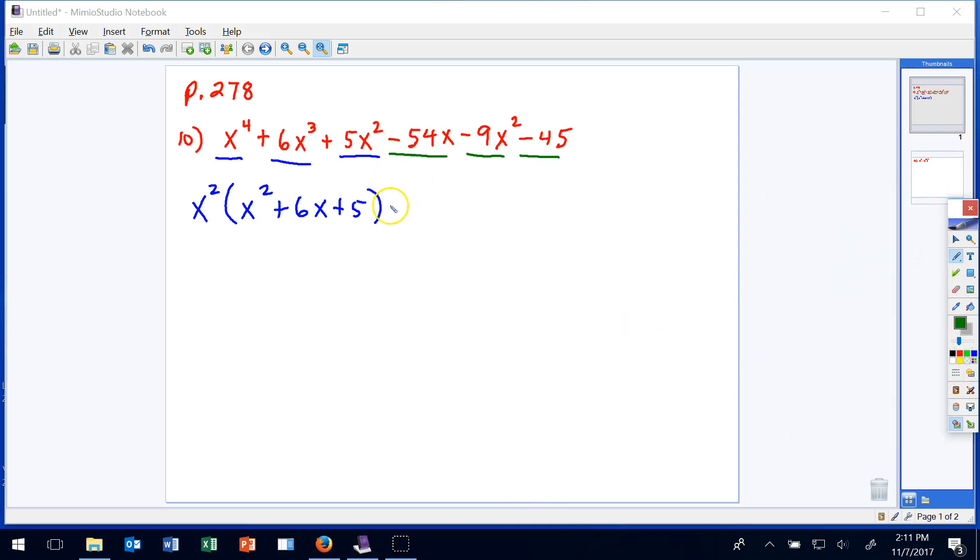Notice how the next sign is minus, and when we do, we're going to get this: negative 9 into negative 54x, that's 6x; negative 9 into negative 9x squared, that's positive 1x squared; and this is going to be positive 5.